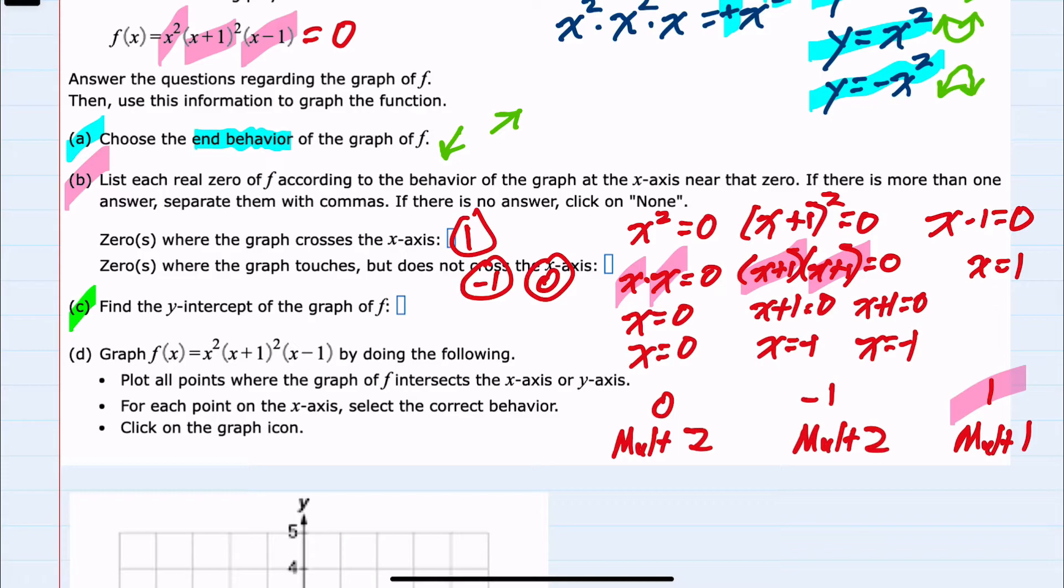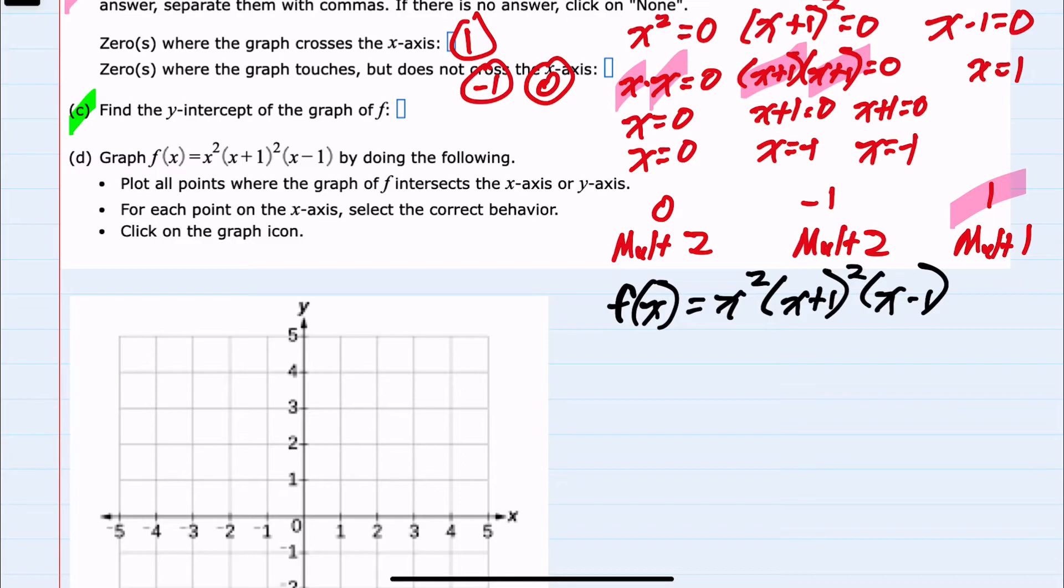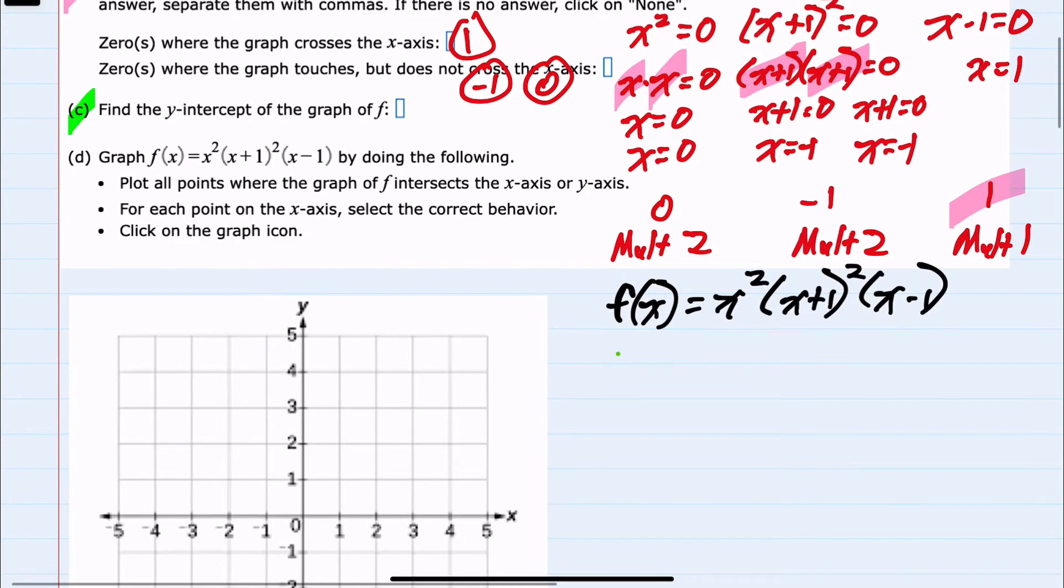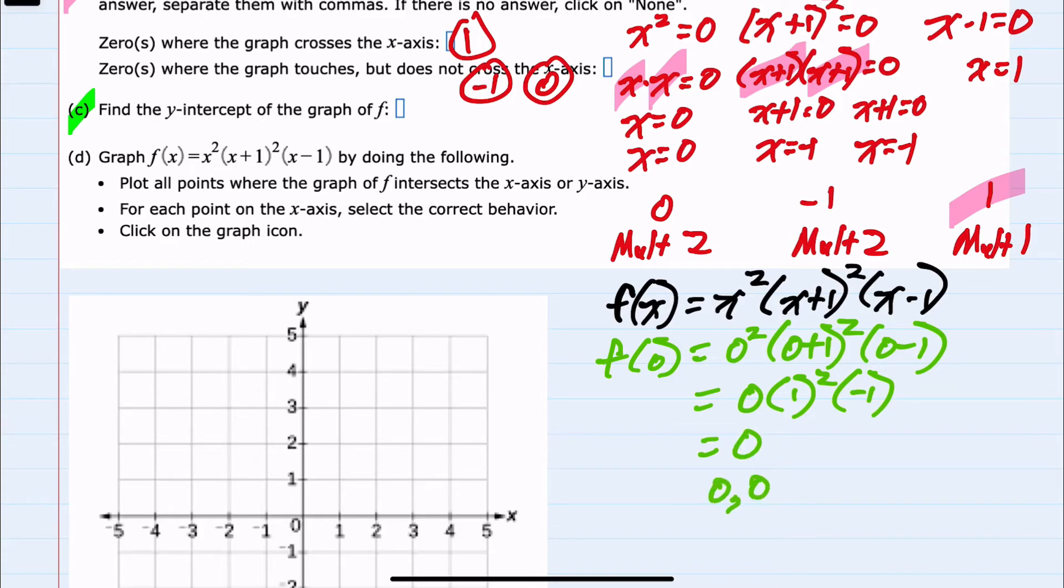And if we move to the next question, find the y-intercept of the graph. To find the y-intercept, we would let x equal 0. So f of 0 would be 0 squared times 0 plus 1 squared times 0 minus 1. And we could simplify 0 squared as 0. We have 1 squared and minus 1. And since these are being multiplied, and one of those numbers is 0, our y-intercept will be the point (0, 0).